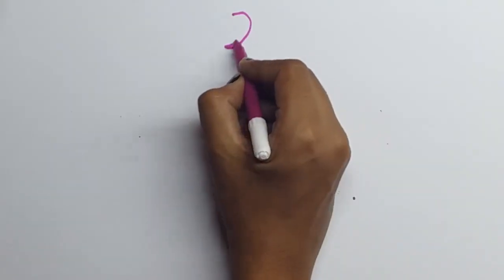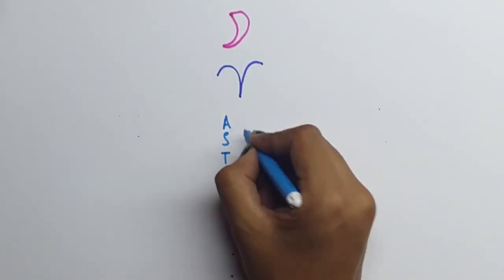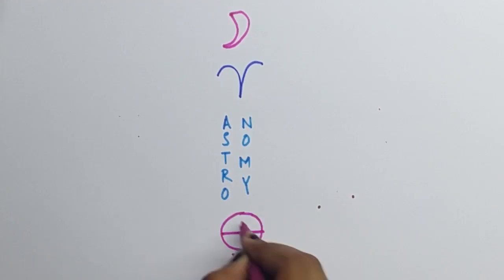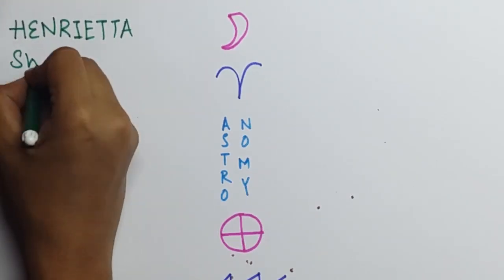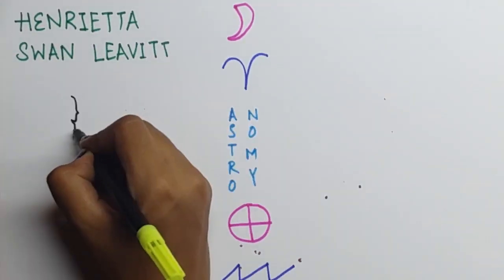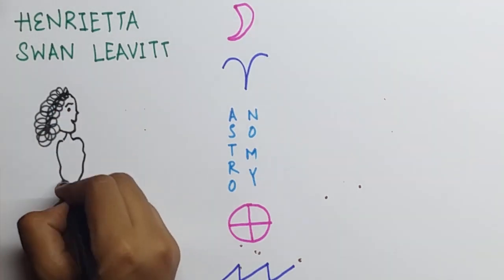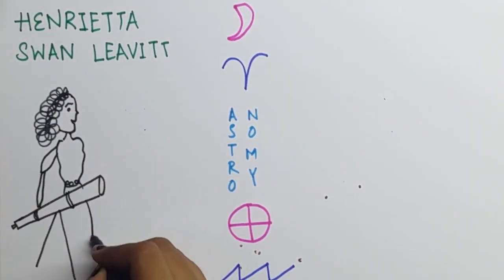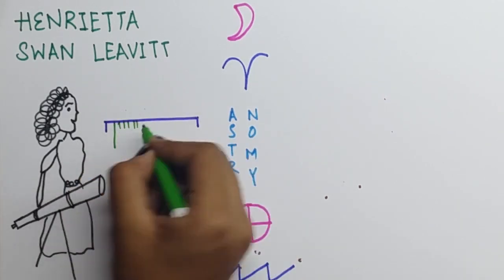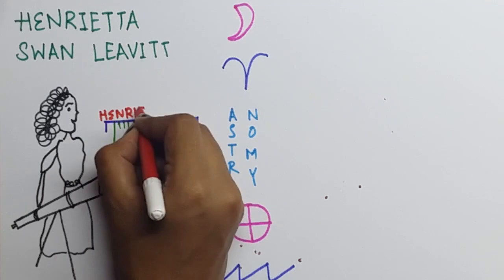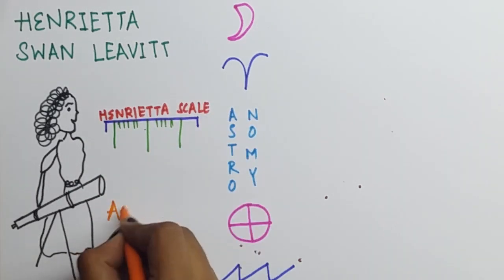Now, women don't waste their time gazing into space, do they? Meet Henrietta Swann Leavitt. Henrietta was an American astronomer, a graduate of Radcliffe College and worked at the Harvard College Observatory. She designed her own scale for distance between planets called the Henrietta scale. This scale ultimately helped us understand the age of the universe.